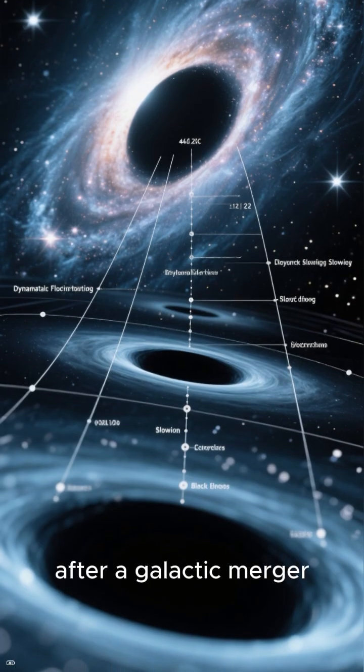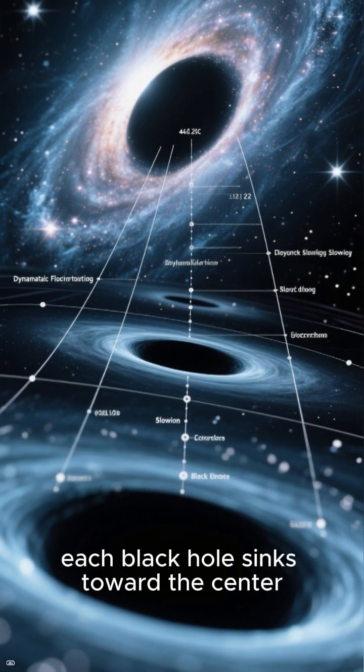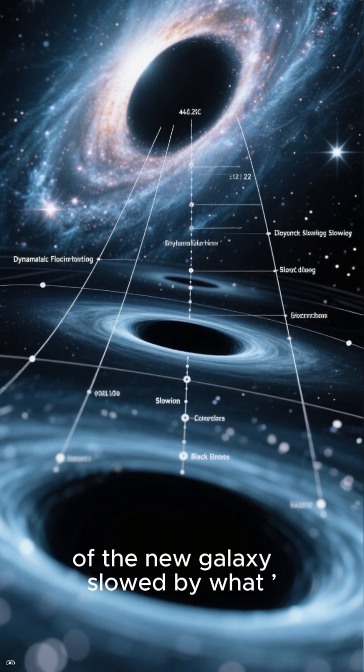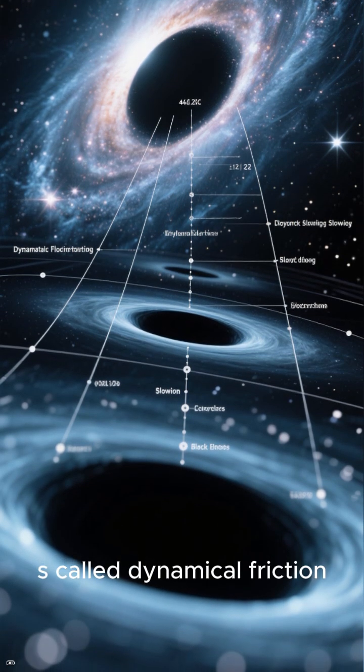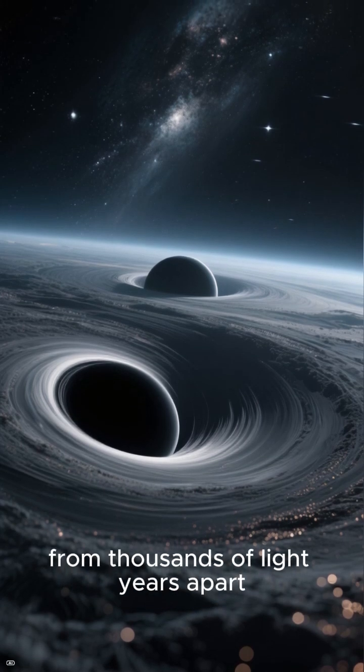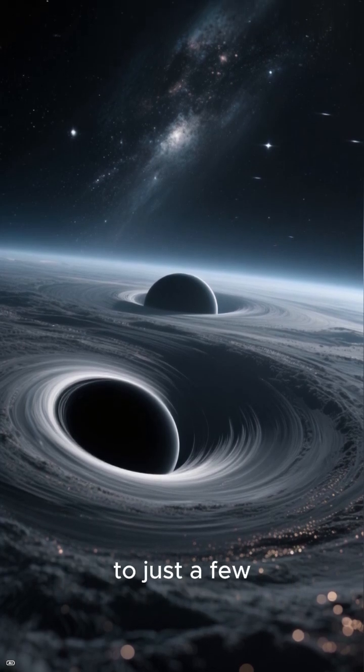According to theory, after a galactic merger, each black hole sinks toward the center of the new galaxy, slowed by what's called dynamical friction. They spiral closer and closer, from thousands of light years apart to just a few.